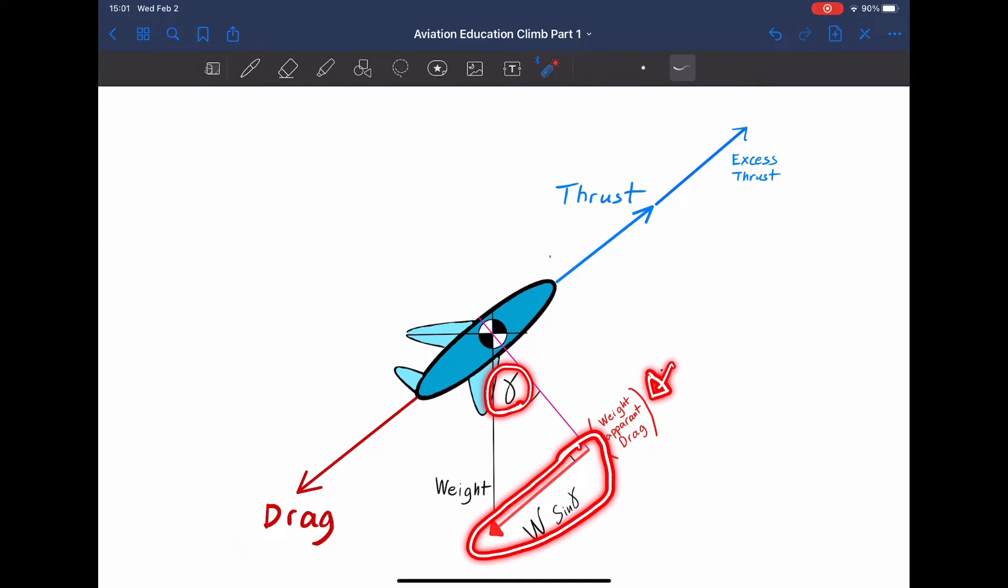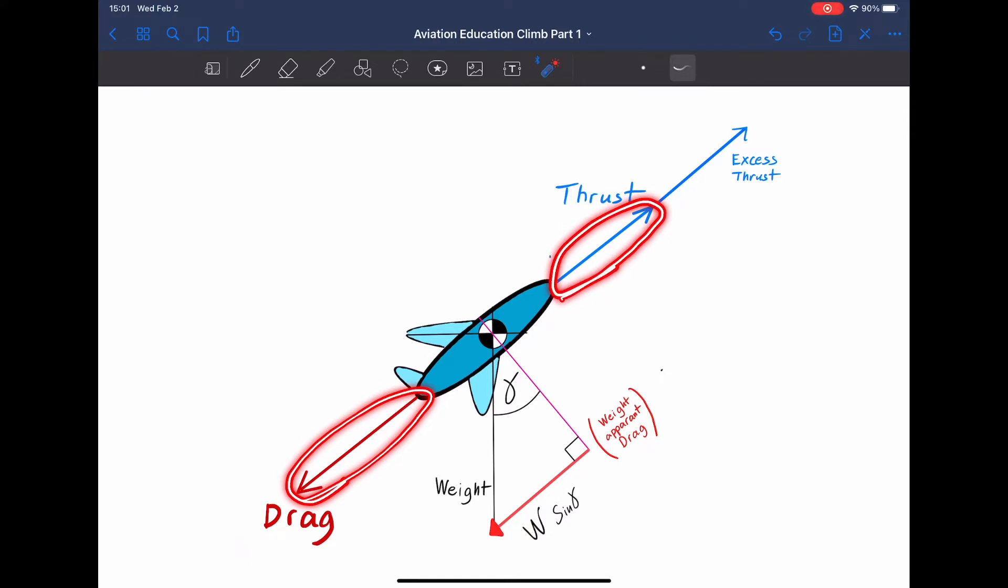The weight apparent drag is not some sort of a friction. The increased climb angle causes the weight to have a rearward component, and that component adds up with the aerodynamic drag.